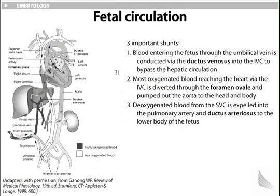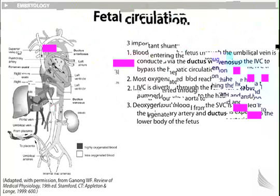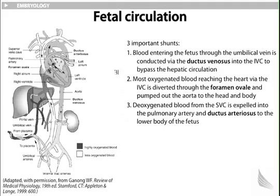Shunt two: most oxygenated blood reaching the heart via the inferior vena cava is diverted through the foramen ovale — between the two atria — and pumped out of the aorta to the head and body. Shunt three: deoxygenated blood from the superior vena cava is expelled into the pulmonary artery, and since the lungs haven't developed yet, shunts into the ductus arteriosus to the lower body of the fetus. Think of it this way: the inferior vena cava enters the heart inferiorly and therefore enters the foramen ovale, while the superior vena cava by gravity enters from above and is pumped out through the pulmonary artery and ductus arteriosus to the lower body.